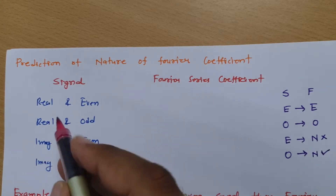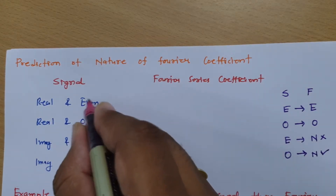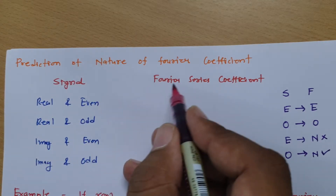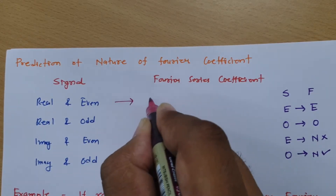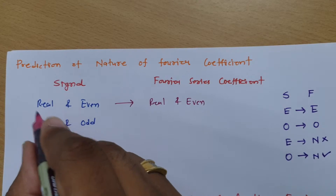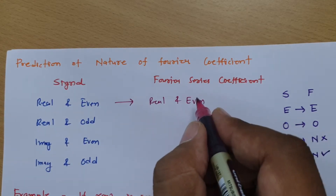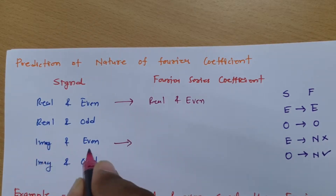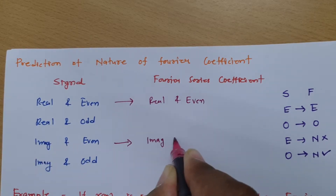If you have a signal which is even, then your Fourier coefficient will be even only and the nature will not change. So if the signal is real and even, then the Fourier coefficient will be real and even. Similarly, if the signal is imaginary and even, the nature will not change, so it will remain imaginary and even.